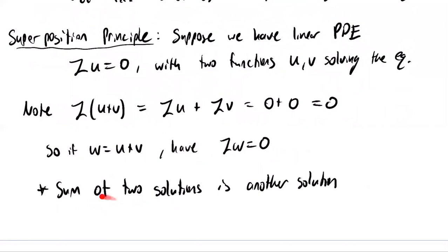This sum is a superposition of the two functions. Maybe these functions are oscillating waves — if both obey a certain PDE, then their sum also satisfies the equation whenever it is linear. Later in the semester, we'll start with certain building blocks that solve the equation in simplified cases and form more general solutions by adding these blocks together, exploiting superposition.